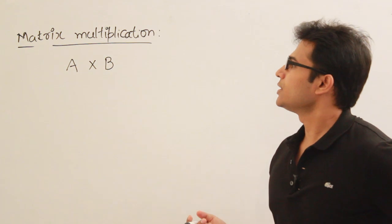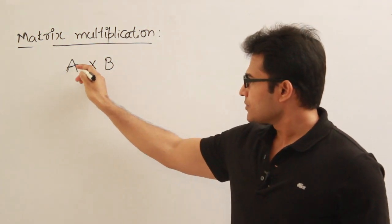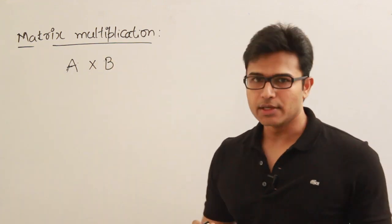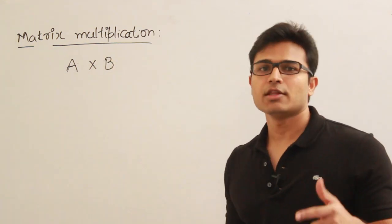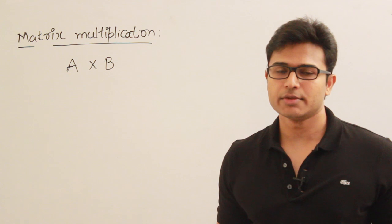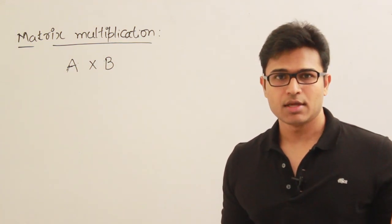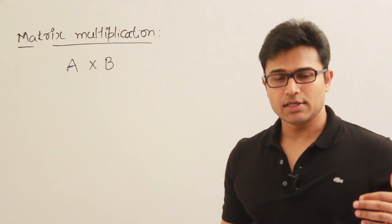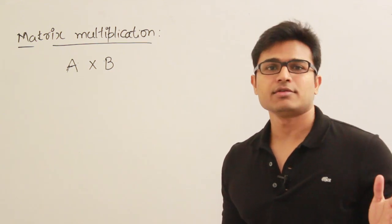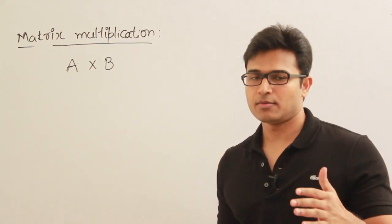What it means is: if the number of columns in A is equal to the number of rows in B, then only we can multiply them. Otherwise, multiplication is not possible. So addition and multiplication cannot always be performed — only when the matrices are conformable.